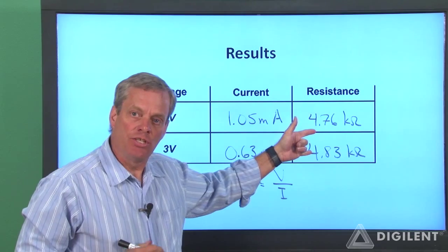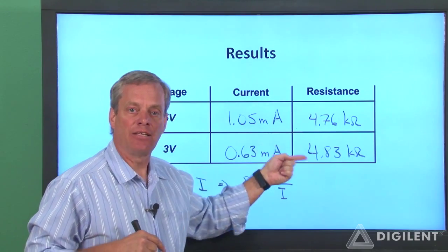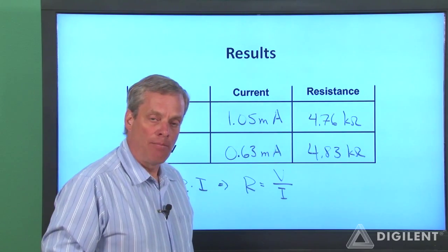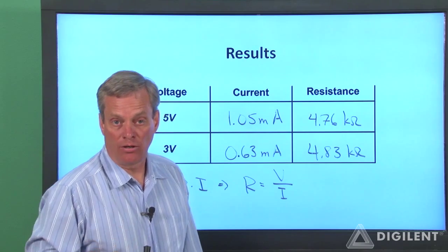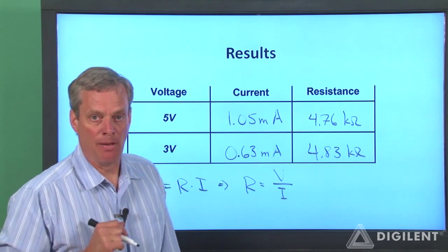Now this degree of variation is kind of expected. Anytime I take a data point, I never get exactly the right number. Let's take a look at this range and now compare it to the nominal resistance for the resistor from the color codes and the measured resistance of the resistor using the ohmmeter on our DMM.